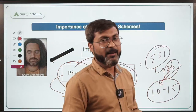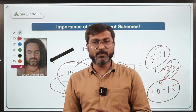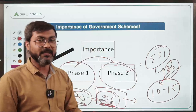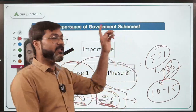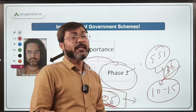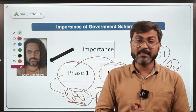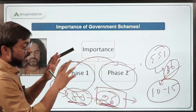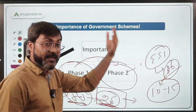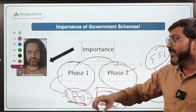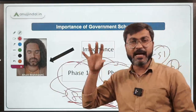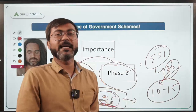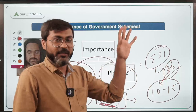The demand of the examination is that you have to cover all government schemes in detail — all 250 of them. Covering these 250 schemes is not a difficult task because most have already been covered through PIB sessions. Without government schemes, you would not be able to clear the examination, so you have to cover at least this many.